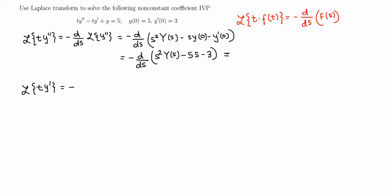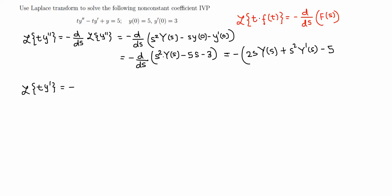Now we take the derivative with respect to s and multiply by negative. We have a product of two functions, so we use the product rule: derivative of s² is 2s times Y(s), plus s² times Y'(s), minus derivative of 5s which is 5, minus derivative of 3 which is 0. Distributing the negative sign gives: negative 2s·Y(s) minus s²·Y'(s) plus 5.